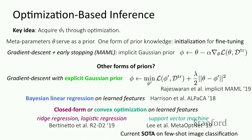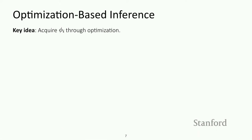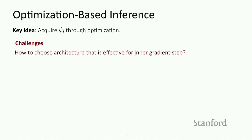Now let's go over a few of the challenges that come up with these types of approaches. One challenge is that MAML may need much deeper networks in order to effectively get an expressive gradient update that can represent a number of different update rules to your parameters. So how do we think about choosing the architecture that is effective for MAML-like algorithms?